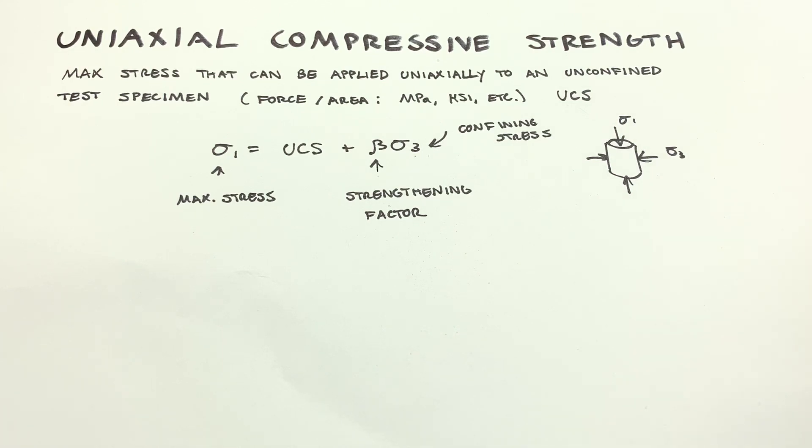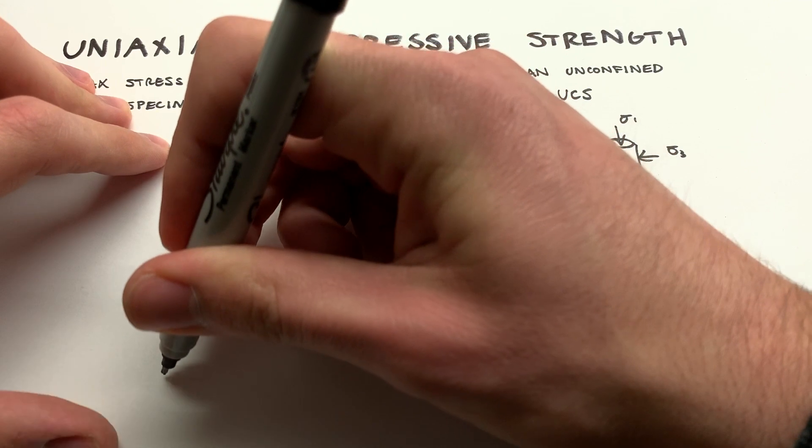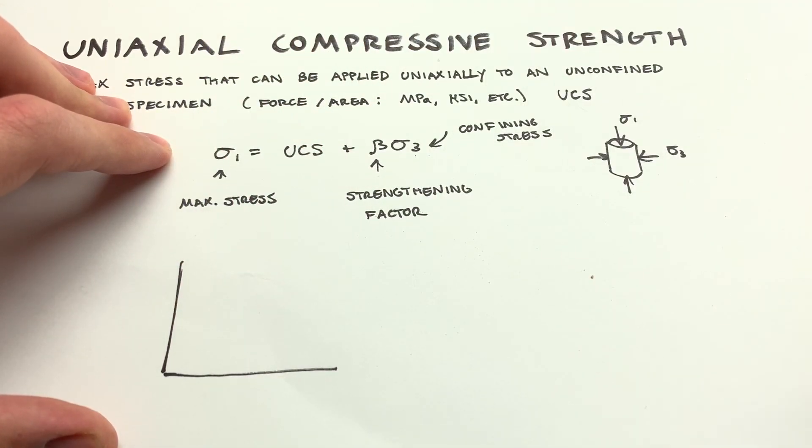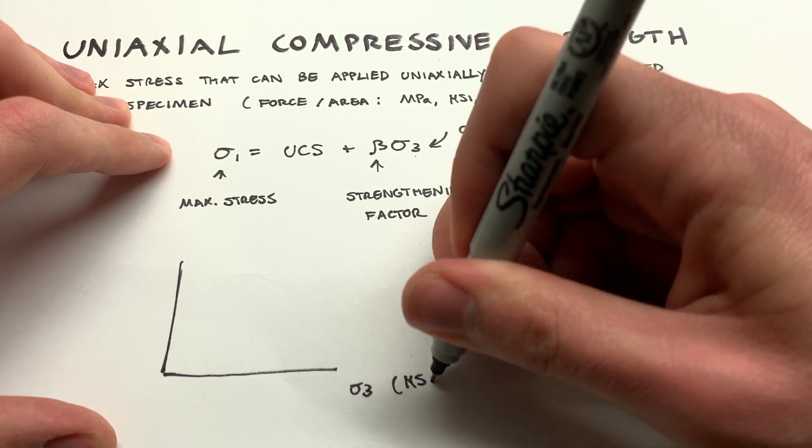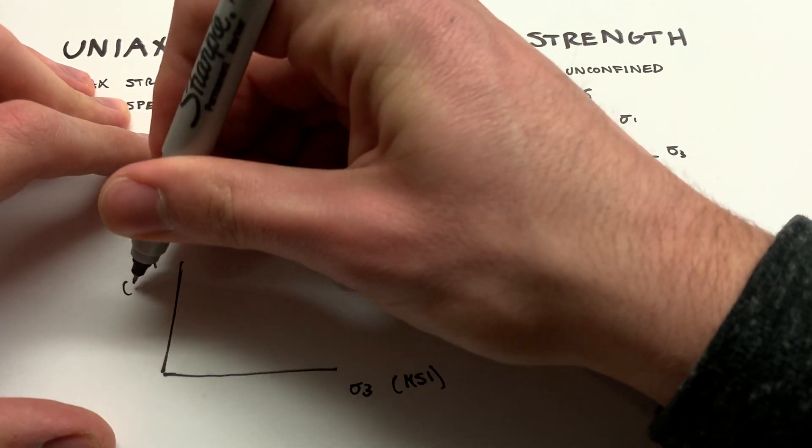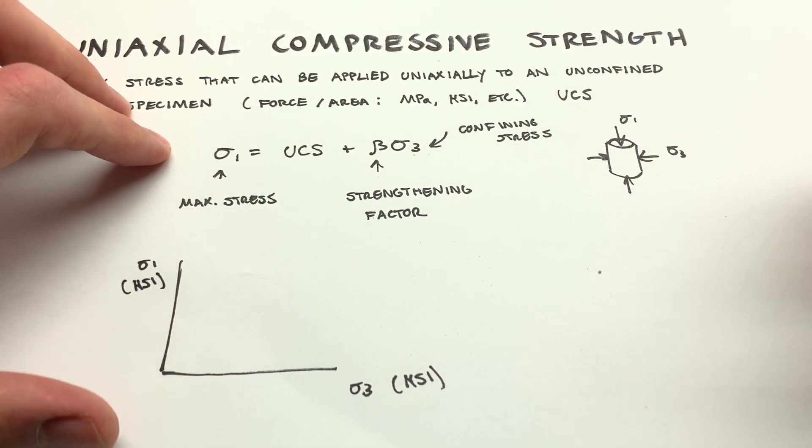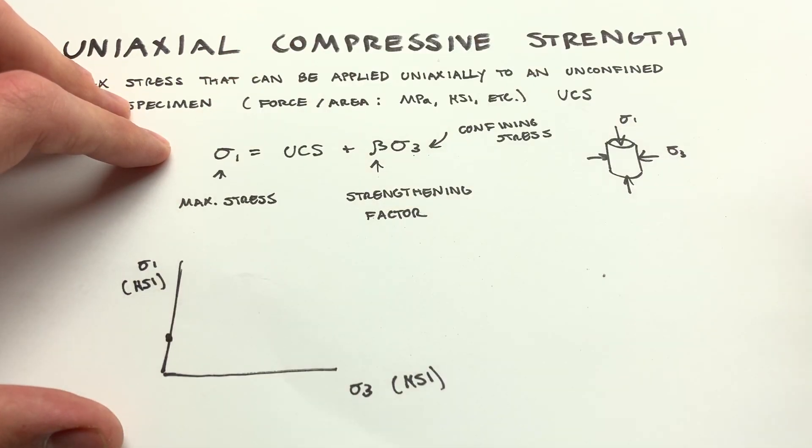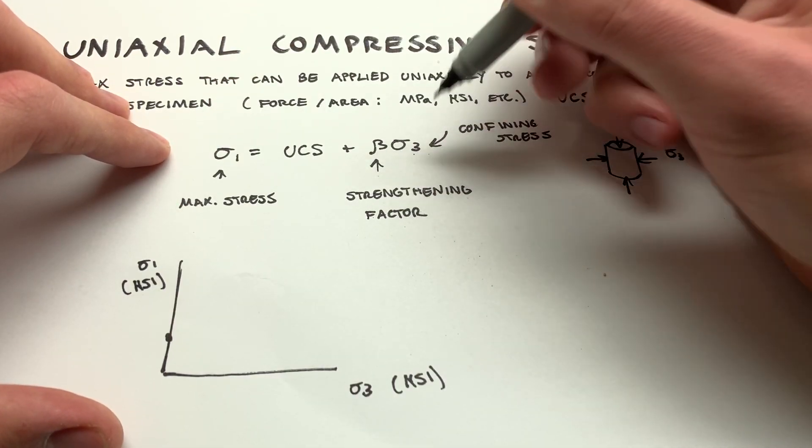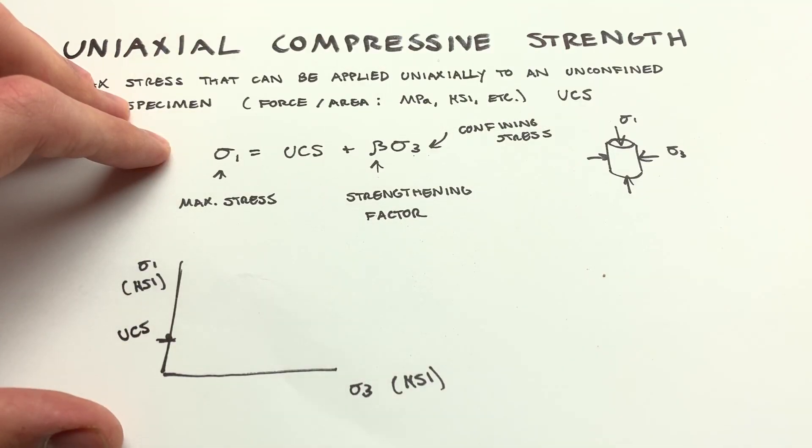So we can plot this as sigma one versus sigma three. If we do our axes here, this is sigma three, let's say in KSI. I used MPA in the last video, gotta keep it varied up, throw in some imperial units every now and again. And then the y-intercept on this is going to be when sigma three is zero. So that's going to be the UCS, whatever that is for your particular rock.